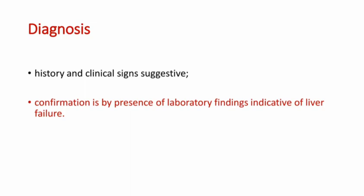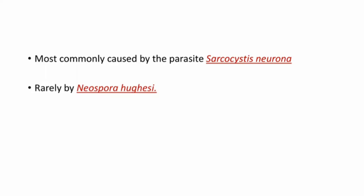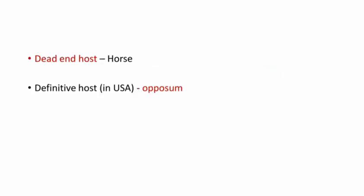The fourth condition is equine protozoal myeloencephalitis, or EPM. This is most commonly caused by the parasite Sarcocystis neurona and rarely by Neospora hughesi. The dead-end host for this parasite is the horse, and the definitive host in the US is the opossum.